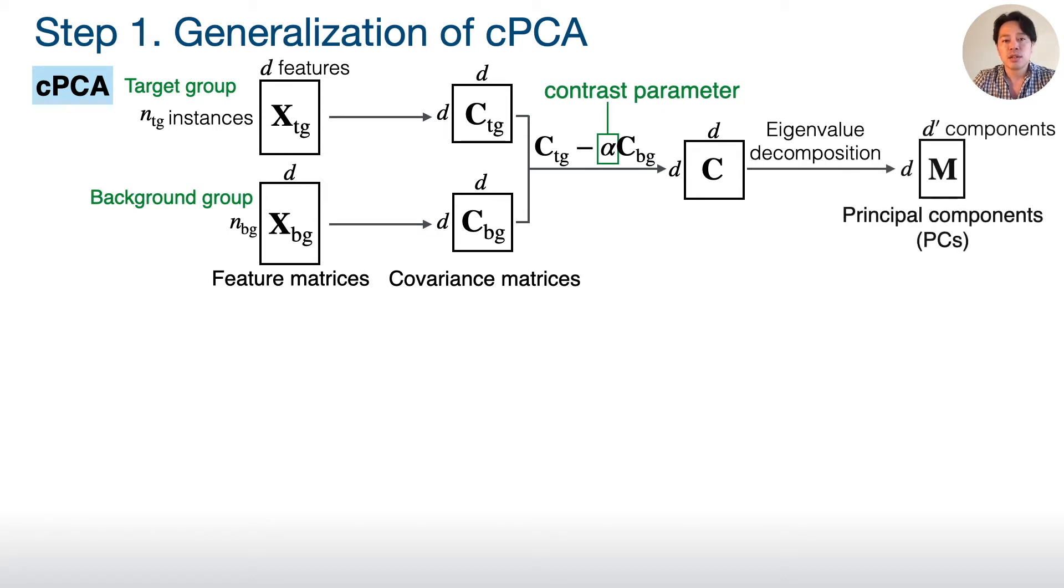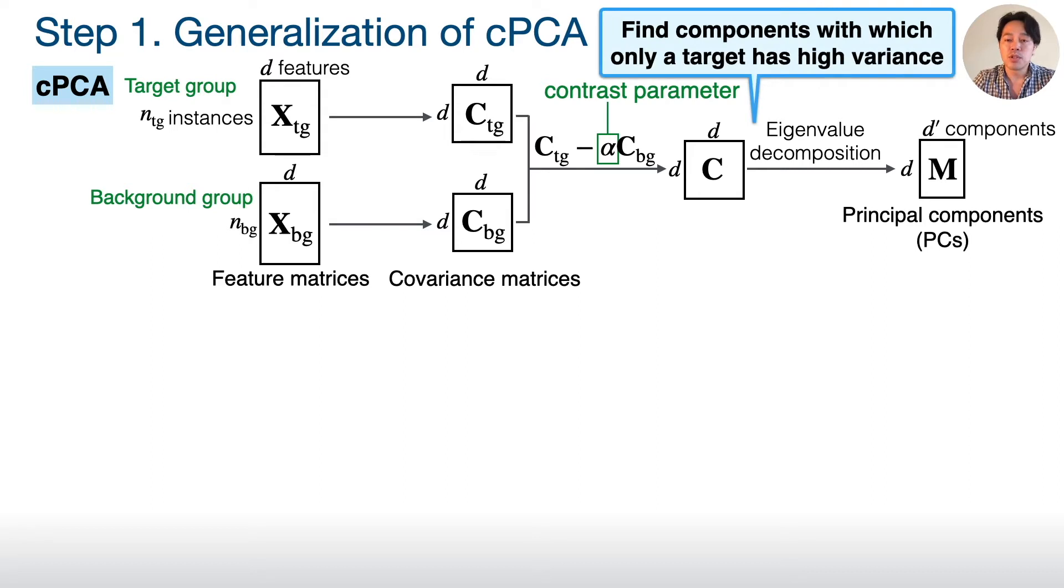Then, CPCA takes subtraction of these matrices with contrast parameter alpha. After that, by performing eigenvalue decomposition, we can obtain principal components with which only the target group has high variance.